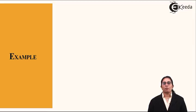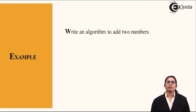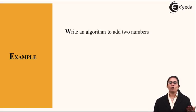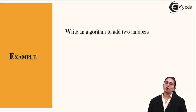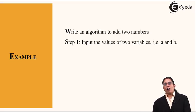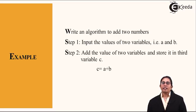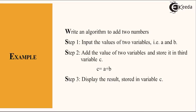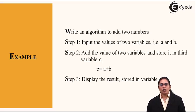Let's take a simple example: write an algorithm to add two numbers. Step one: input the values of two variables, say a and b. Step two: add those two variables and store the value in another variable c, written as c = a + b. Step three: display the result stored in variable c. This is how we write a simple algorithm to add two numbers.